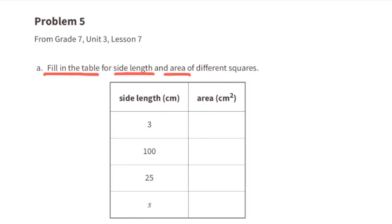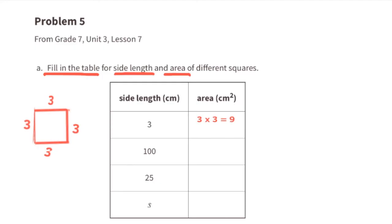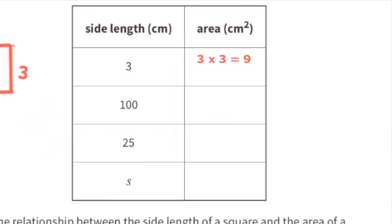Problem 5 — fill in the table for side length and area of different squares. The first square has side lengths of 3 centimeters: 3 times 3 equals 9, so the area is 9 centimeters squared. The next square has side lengths of 100 centimeters: 100 times 100 equals 10,000 centimeters squared.